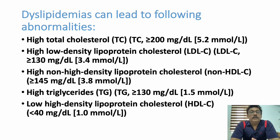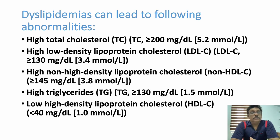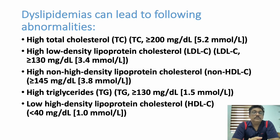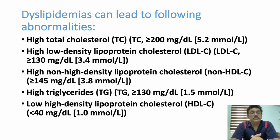HDL less than 40 mg/dL is also very important. VLDL more than 145 is important, and triglycerides more than 130 mg/dL are important. In a lipid profile panel, HDL is the good cholesterol — if its levels are low, that is bad. All other cholesterols are bad cholesterol; if their levels are increased, that is also bad.